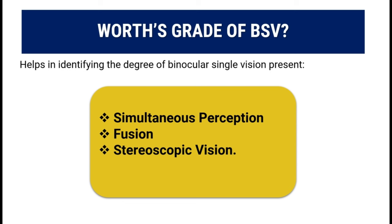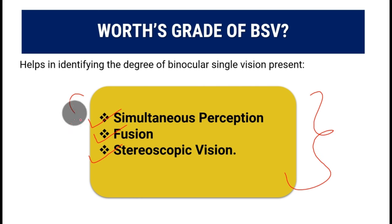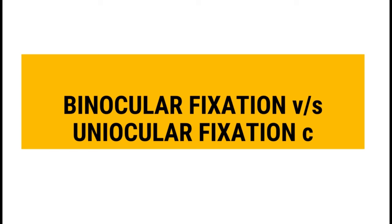The Worth's grades of BSV describe three grades that help identify the degree of binocular single vision present in a patient: the ability to simultaneously perceive something, called simultaneous perception; the ability to fuse those two images into one, called fusion; and the ability to perceive depth and see in three-dimensional structure, called stereoscopic vision.